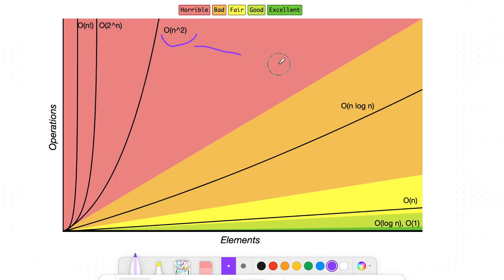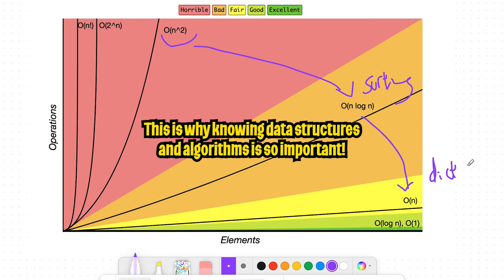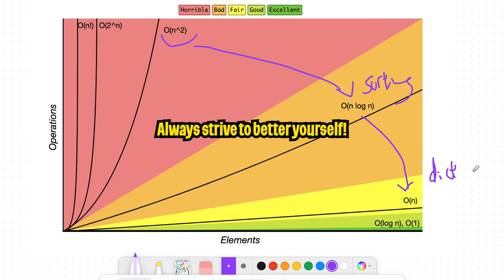We brought our solution from O n squared all the way down to O n log n, just by sorting the input. And then we finally dropped it down to O of n, just by using a dictionary. As you can see, data structures and algorithms is super important. And getting really good at this can definitely help you land a job. But what's more important is that your code will be more efficient, ultimately making you a better programmer.